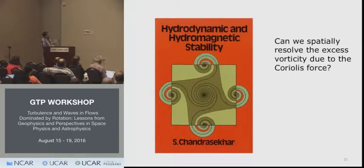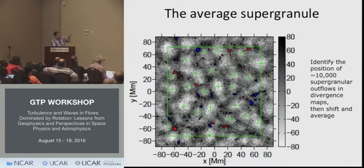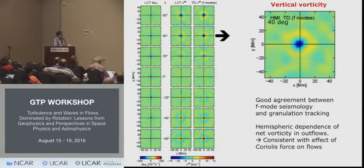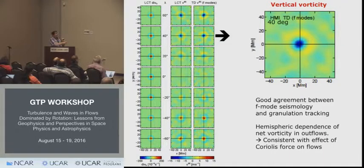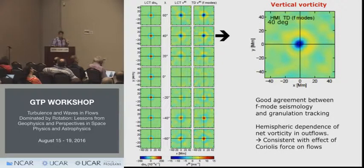We wanted to resolve the vortices connected with the divergence signal, so we picked 10,000 supergranules, shifted and averaged them to construct an average supergranule. Doing that, we can locate in space the vortices associated with the outflows. This is vertical vorticity as a function of latitude: around the equator there is no preferred vorticity for an outflow, while in the north you have a negative circular velocity and in the south the sign switches — exactly as expected.